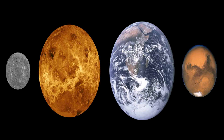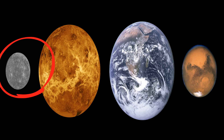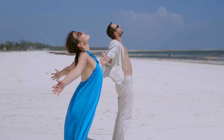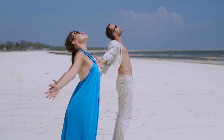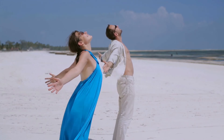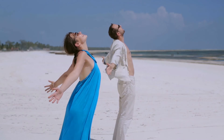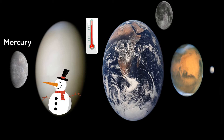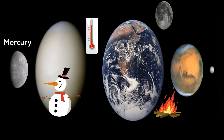Mercury is the smallest and innermost planet in our solar system. Its orbital period around the sun is 87 days, which makes it the shortest of all the planets in the solar system. Its atmosphere is made up of 42% oxygen, 29% sodium, and 22% hydrogen with a little helium. There is almost no atmosphere to retain heat, so its temperature varies greatly during the day, ranging from minus 173 degrees Celsius to 427 degrees Celsius.